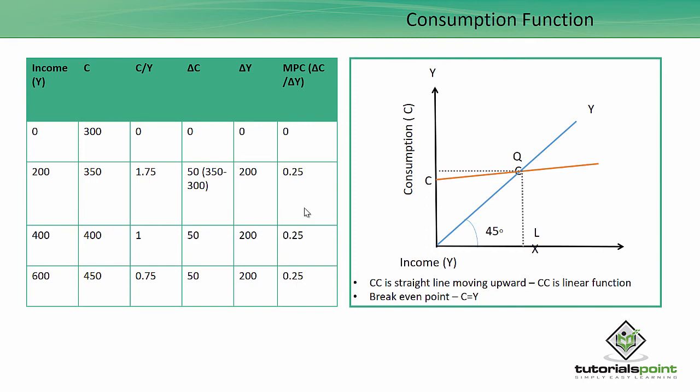So if I have to plot this, this is how my consumption function will look like. So here you can see this is 400, the consumption is 400 when the income is also 400. That's an equal point.